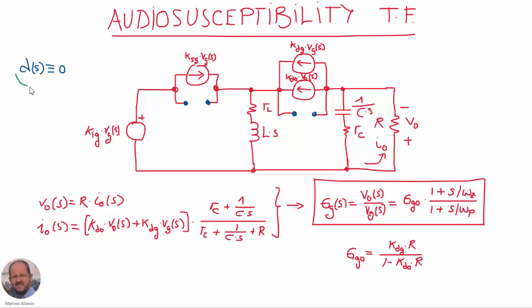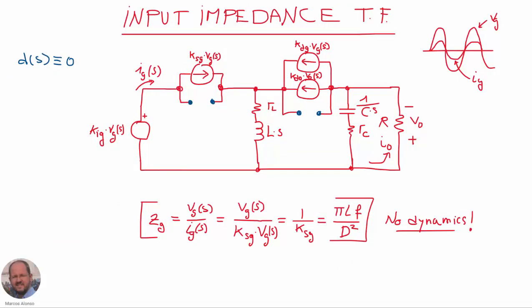If we want to obtain the audio susceptibility transfer function, we make zero the perturbations coming from the duty cycle and consider only perturbations coming from the line voltage vg. In this case we have open circuits at those points and then we solve the circuit by obtaining the different equations. We can obtain the final transfer function Gg, which is vo over vg. We obtain this expression, which has the same dynamics, with the only difference being the DC value, which can be calculated using this expression.